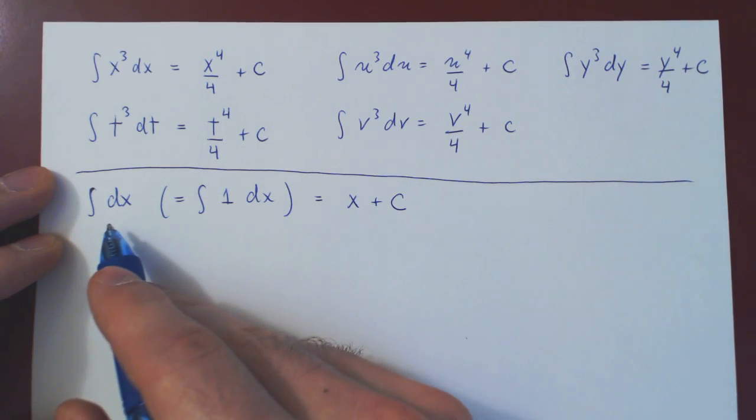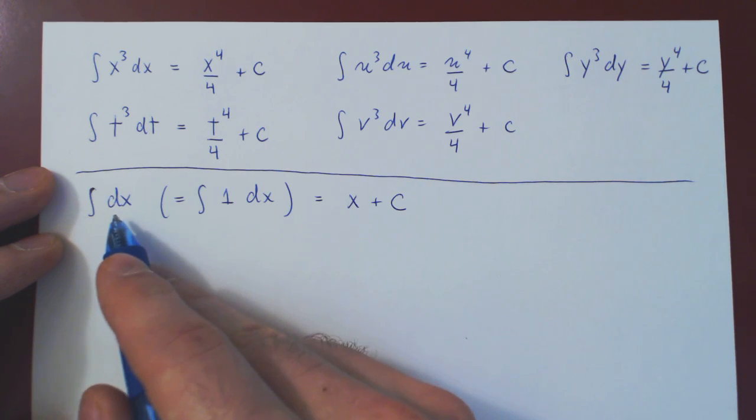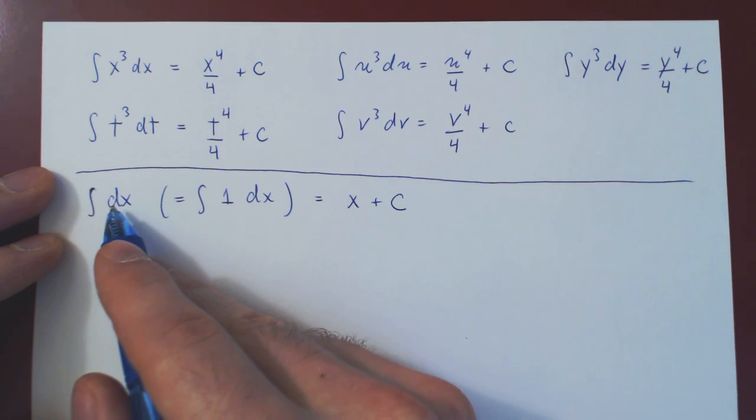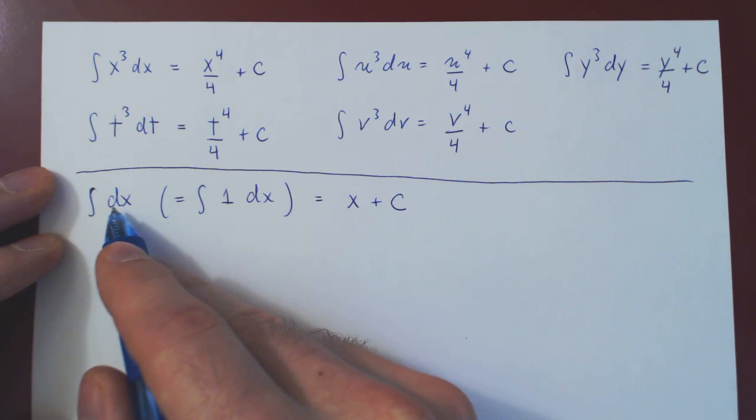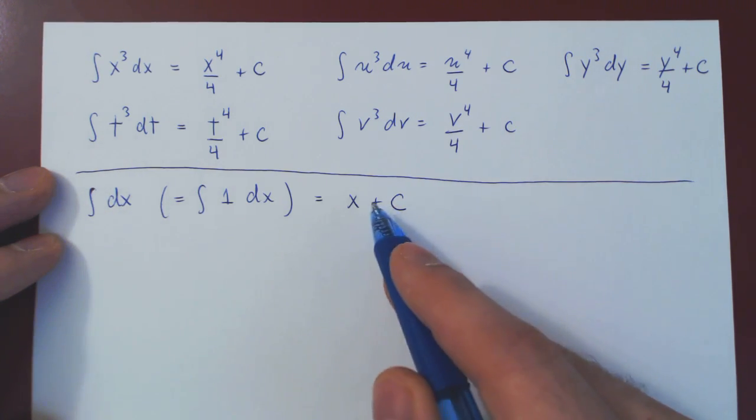Or you can think of it in a different way. Think of dx being the differential of the variable x. And, of course, the integral is the opposite operation than differentiation. So if you take the differential of x, then you integrate, it cancels, and you're left with x.